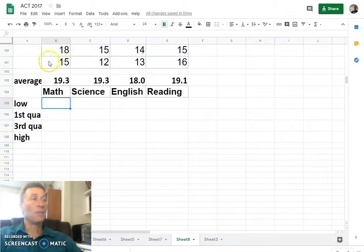So the ACT, we have 100 students, four categories. We have math, science, English, and reading, a lot of data to look at.